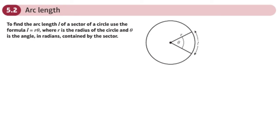This is the second section on chapter 5 on radians from the Pure 2 book, and we'll be looking at arc length.